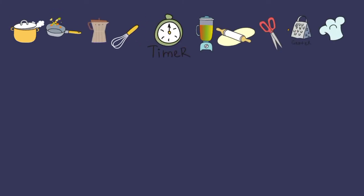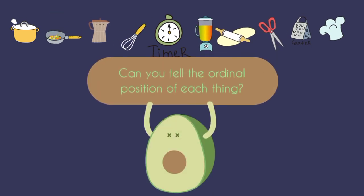If we put these things in line, can you tell the ordinal position of each thing?